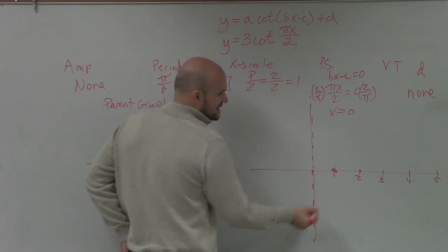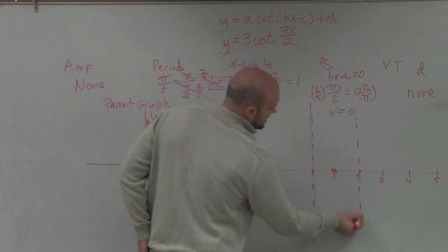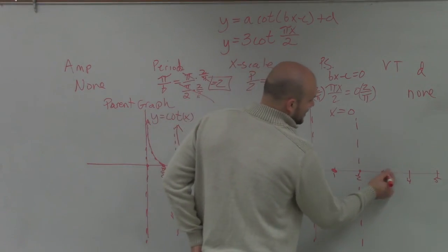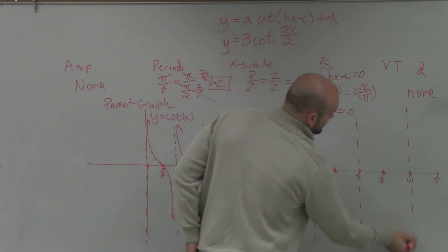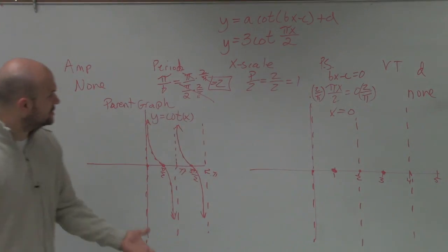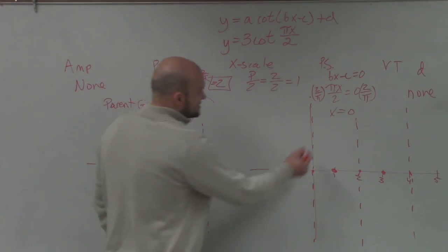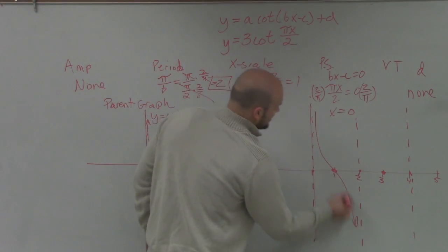The next point is an x-intercept. The next intercept is our asymptote. Intercept, asymptote. There's no vertical translation up or down. There's no reflection. So now, I can simply sketch my graph.